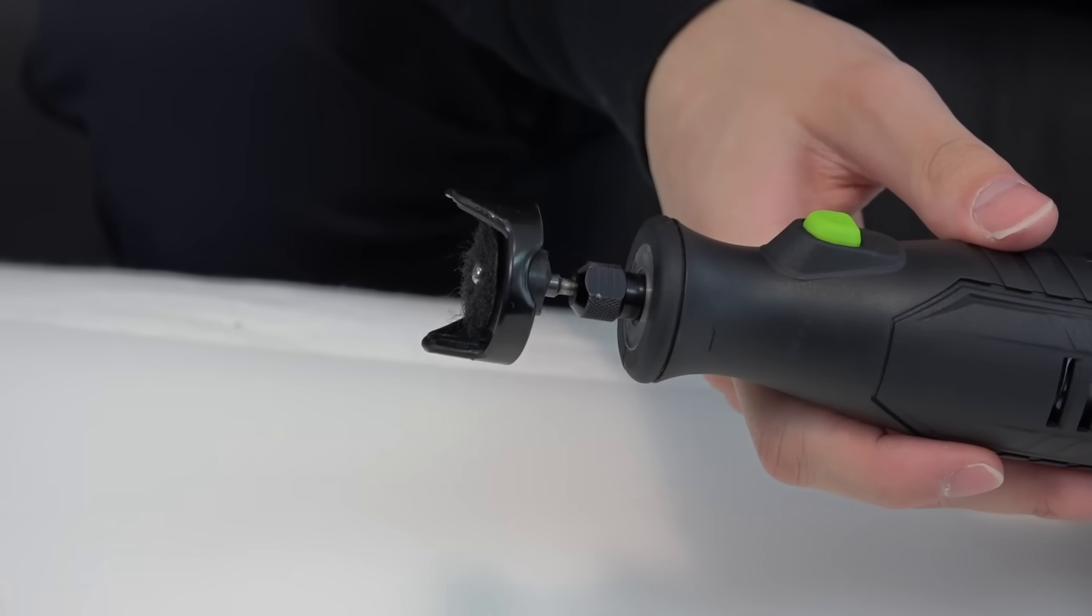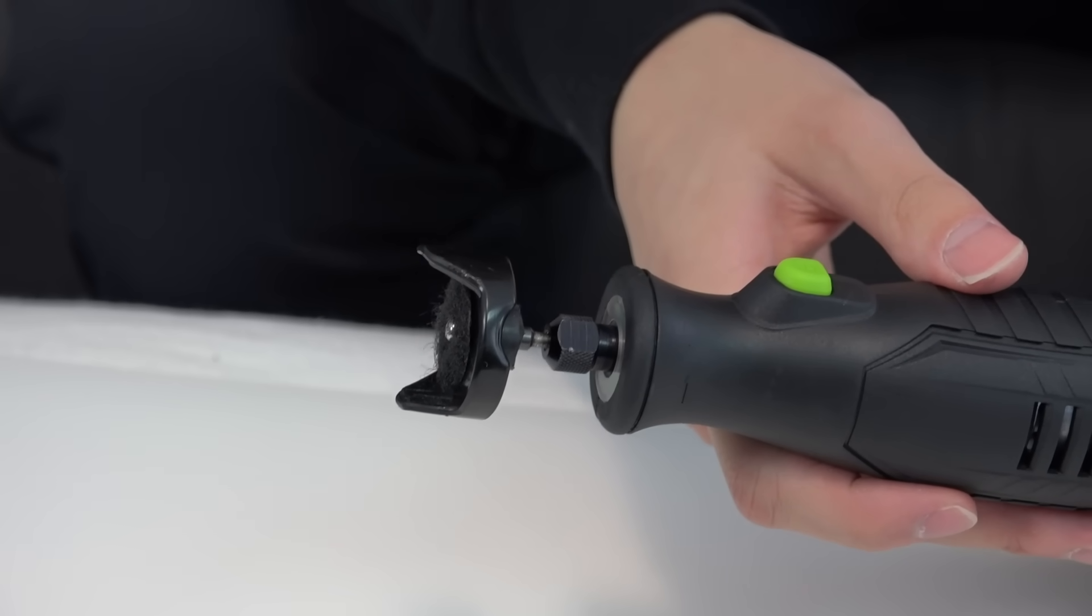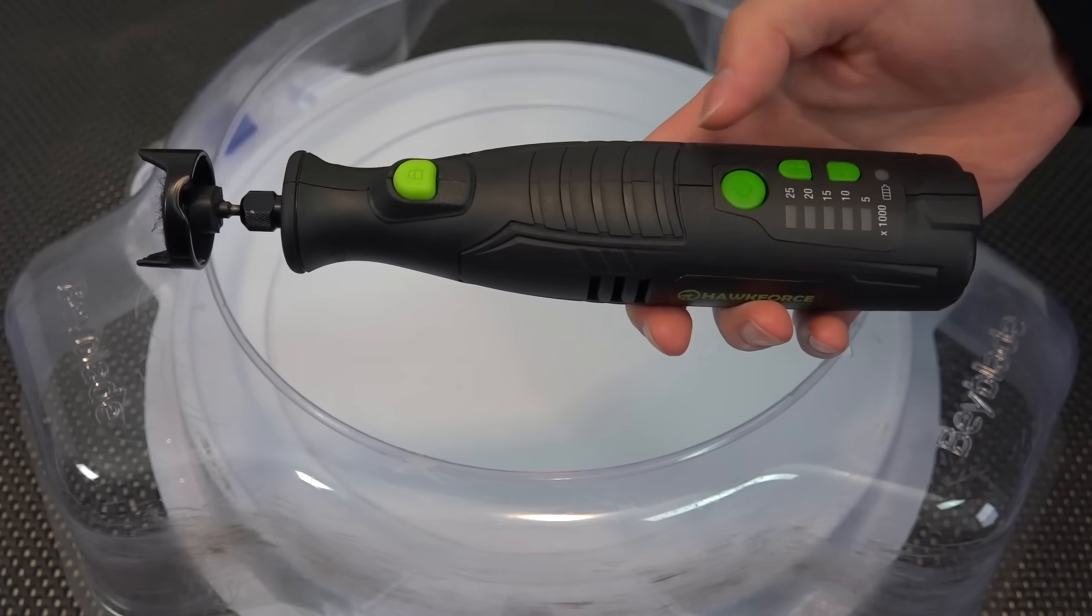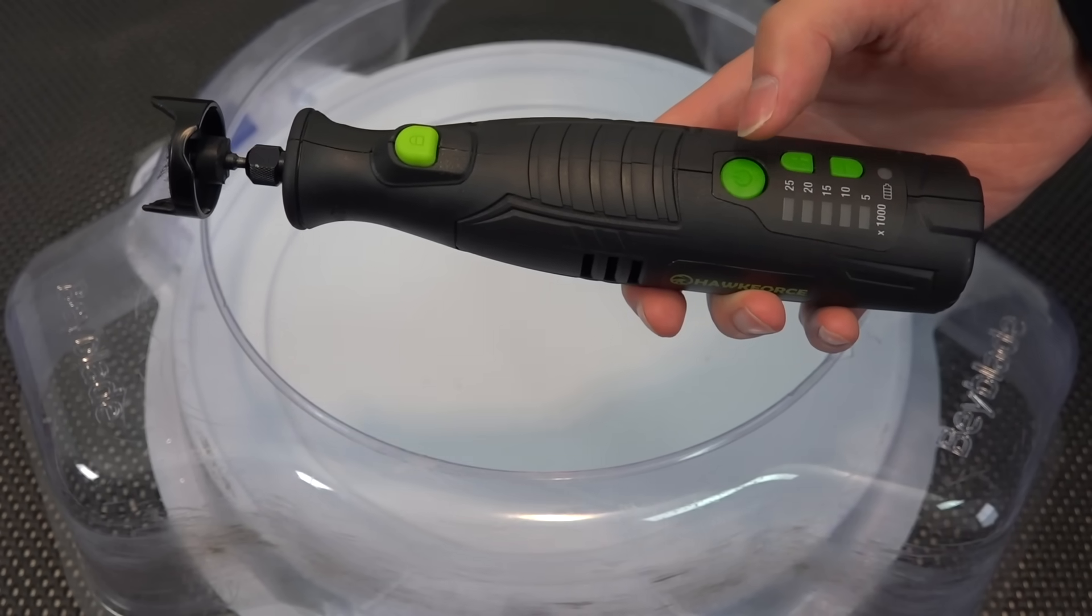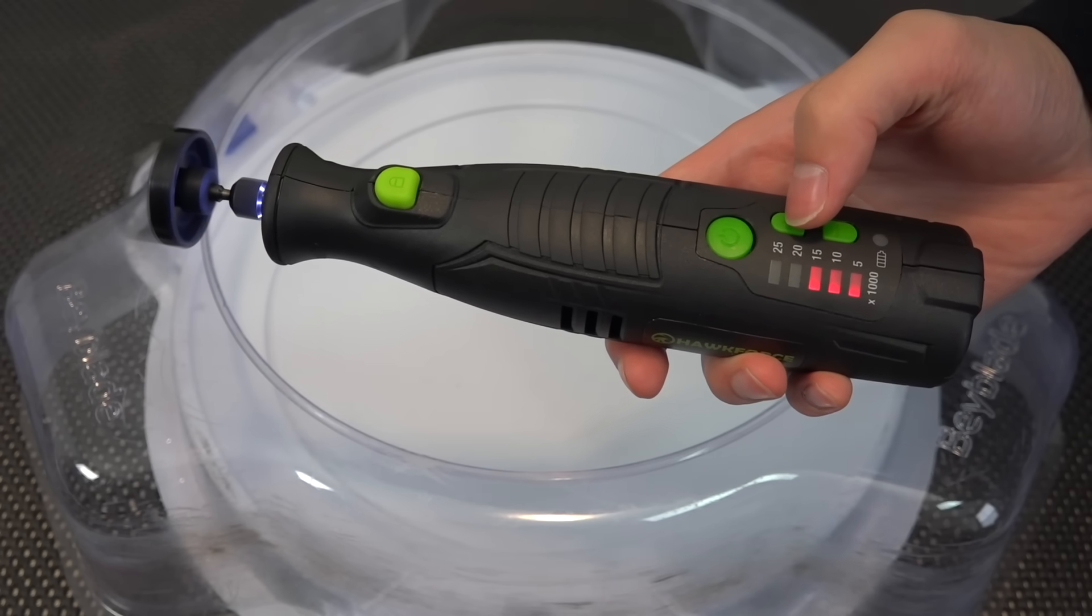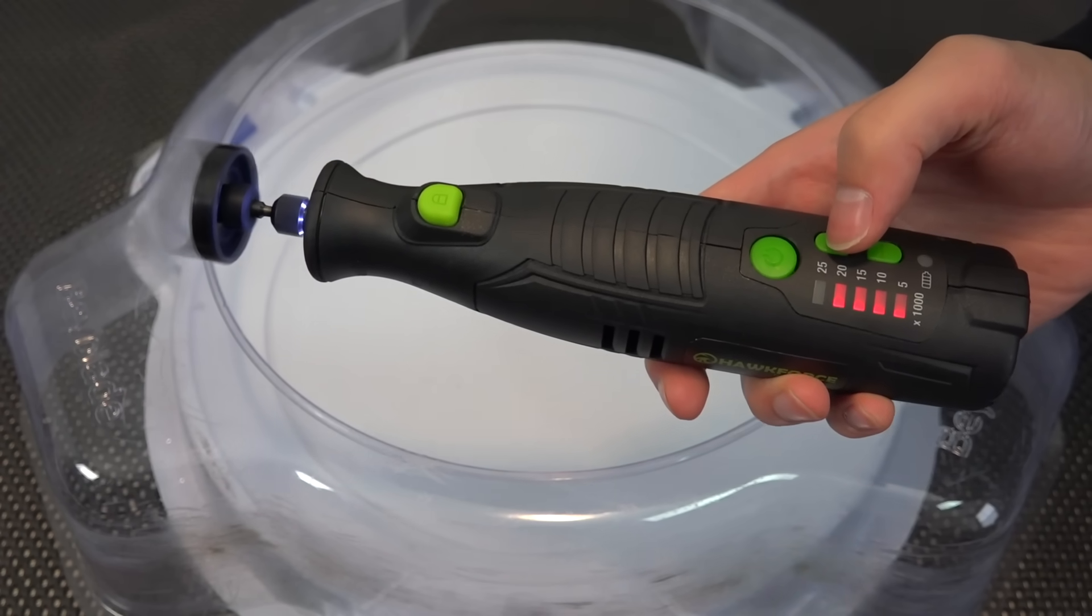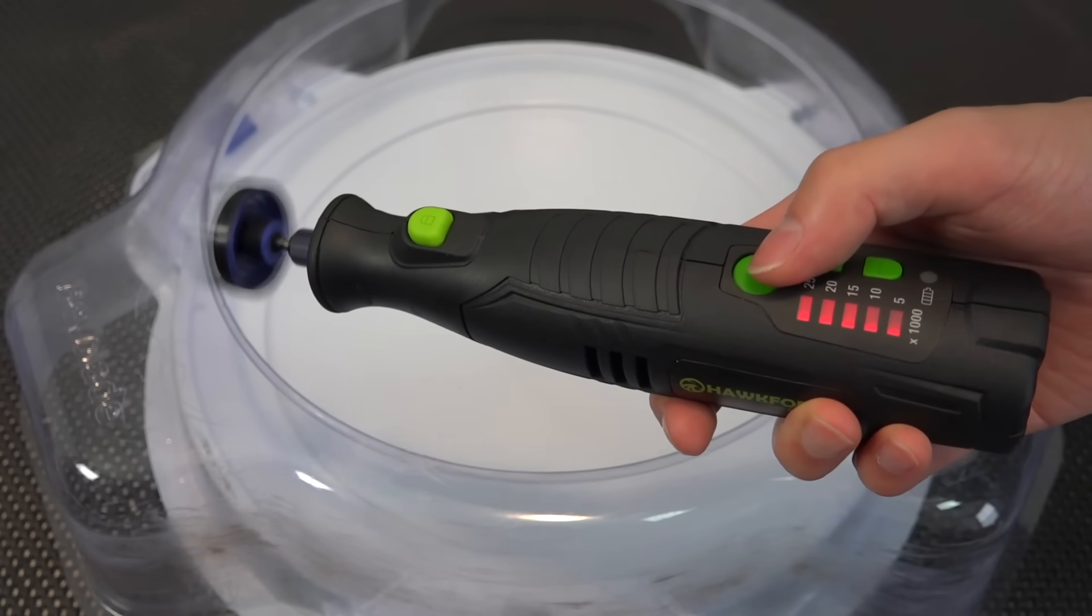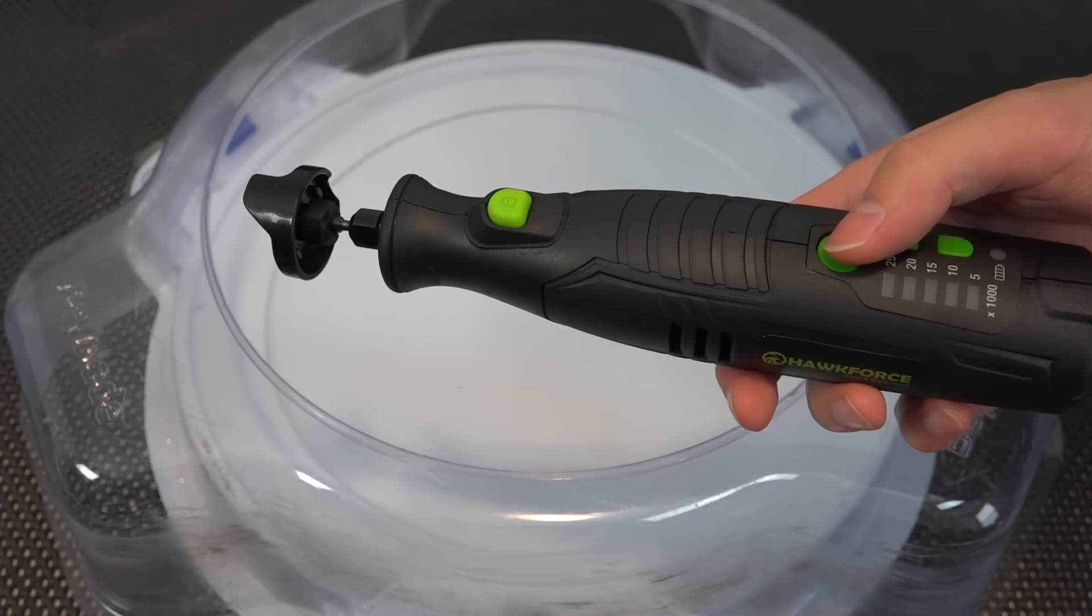So yeah, we'll do some test spins and then of course, some test battles. Alright, so let's begin with a test spin. So first of all, I'm going to show you how fast this thing is. Right? Got the first speed. Oh, that's at 15k? Yeah, 15k. 20k. 25k. Okay, that setting we'll never use.